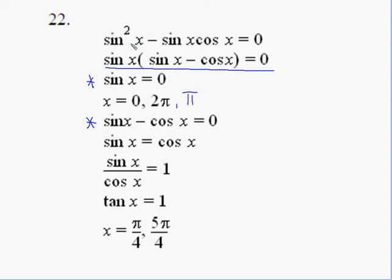Look for a common factor first. So sine x can come out. These are sine x, cos x in the bracket. Sine x equal to zero from the front, and we get our three values there.